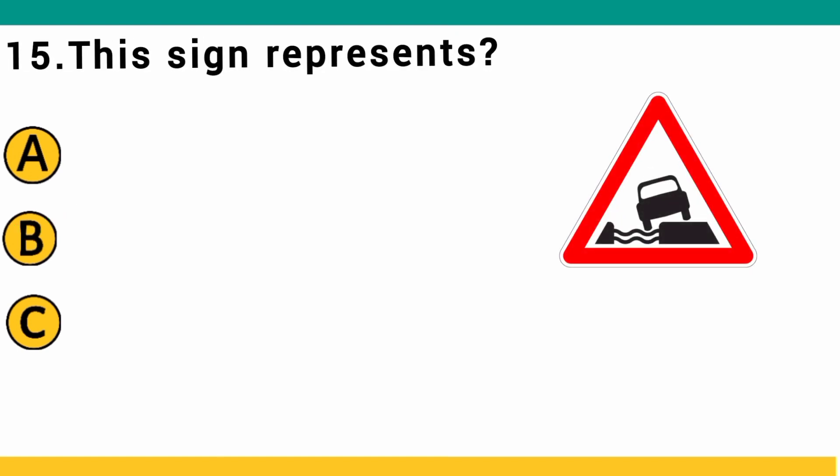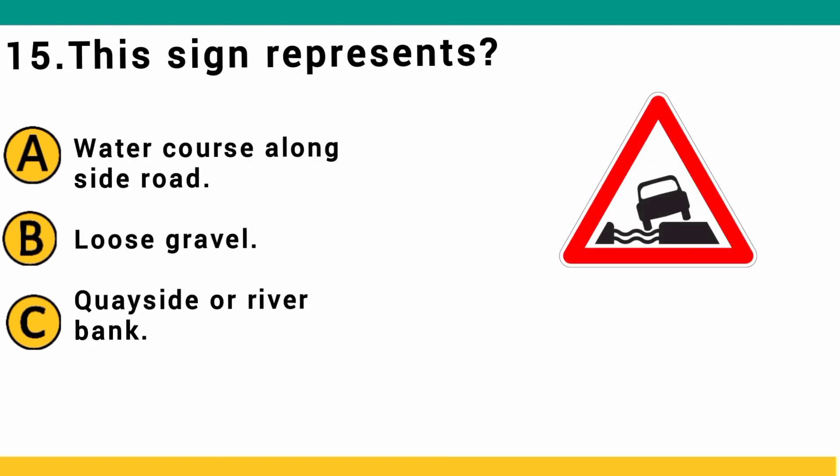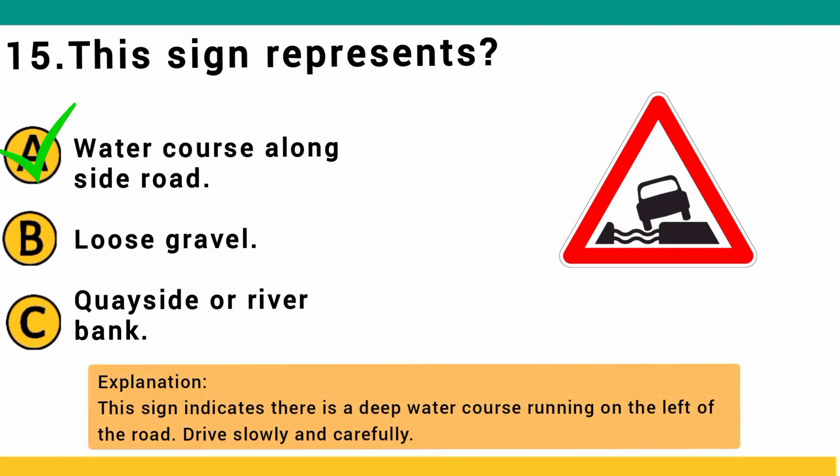This sign represents: A) water cross alongside road, B) loose gravel, or C) quayside or river bank. The correct answer is A: water cross alongside road. This sign indicates there is deep water running alongside the left of the road — drive slowly and carefully.